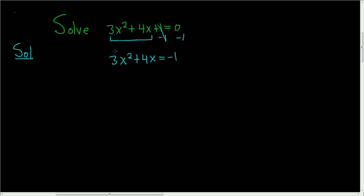The next thing you want to do is make sure this number here is a 1. So the easiest way to deal with this is divide every term by 3. When we do that, we end up with x squared plus 4 thirds x equals negative 1 third.